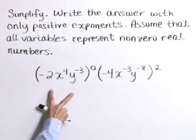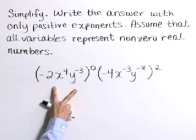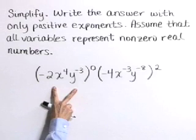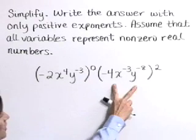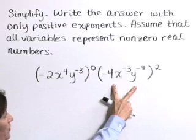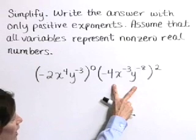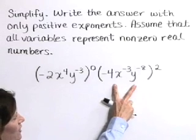Here we have the quantity negative 2 x to the fourth y to the negative third all raised to the zero power times the quantity negative 4 x to the negative third times y to the negative eighth all raised to the second power.